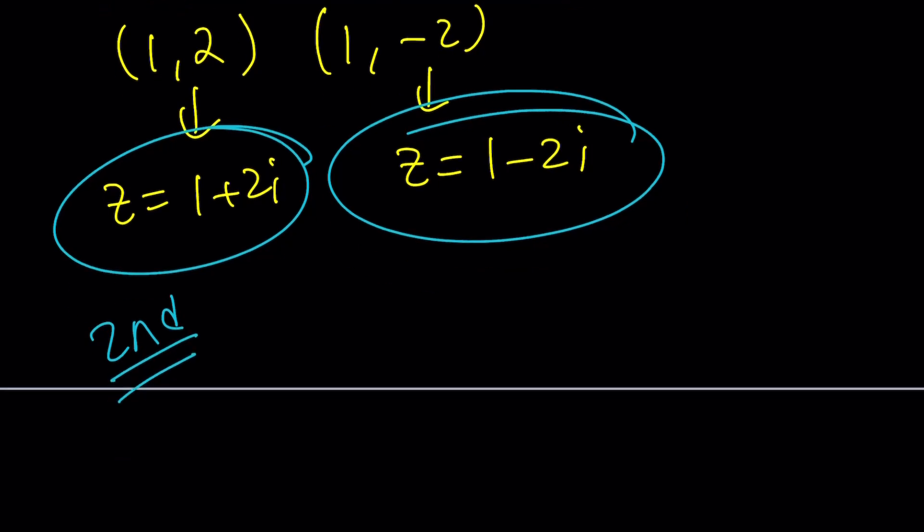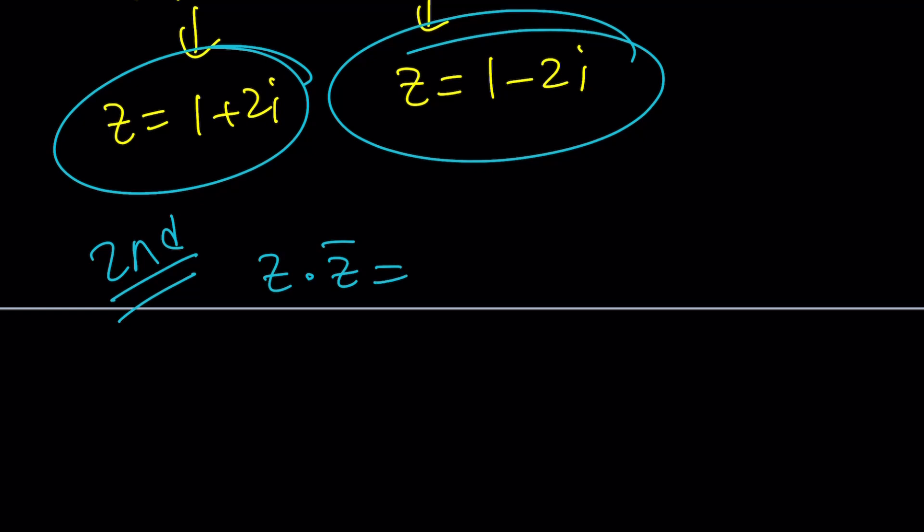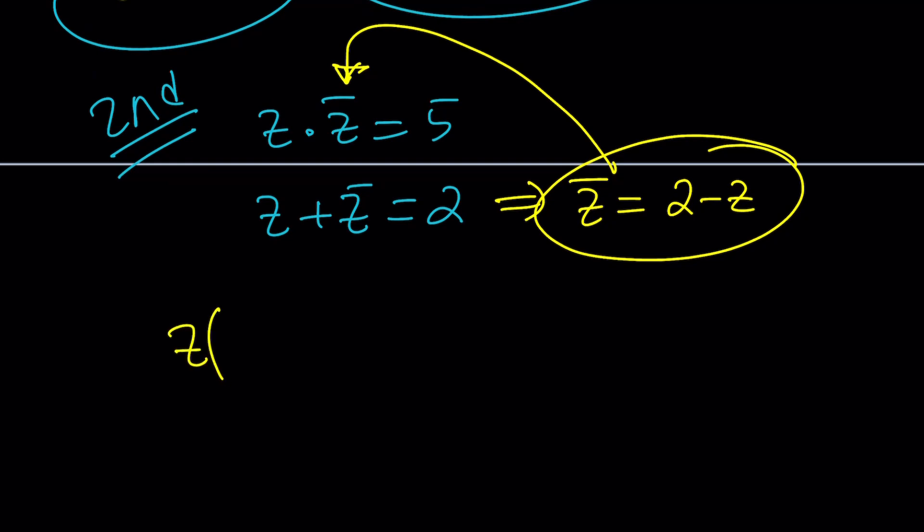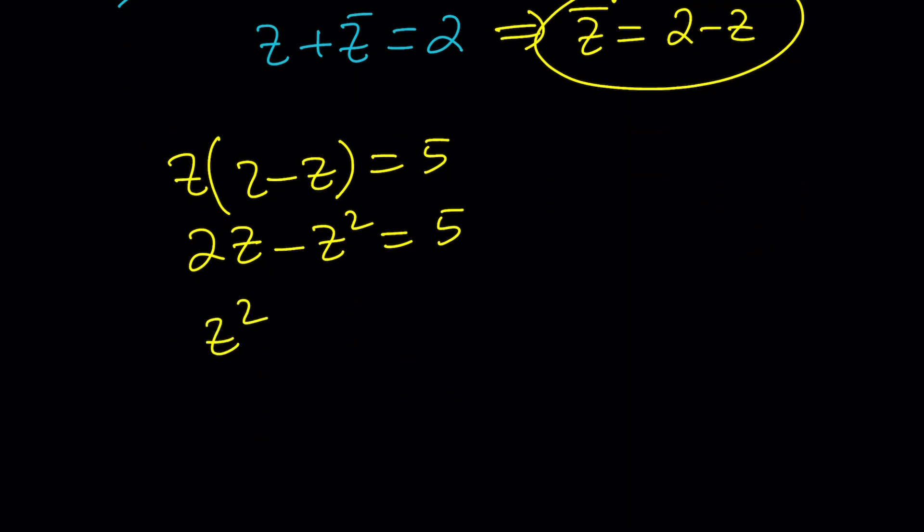Again I have Z times Z bar equals five and Z plus Z bar equals two. Now regardless of what Z bar means, think about it: we are given the product of two numbers and we know their sum is two. What does that tell you? Substitution maybe? Yeah, we can do that. For example, from the second equation we can replace Z bar with two minus Z and that can be plugged in here. That gives us Z times two minus Z equals five, and that's two Z minus Z squared equals five, and that is Z squared minus two Z plus five equals zero.